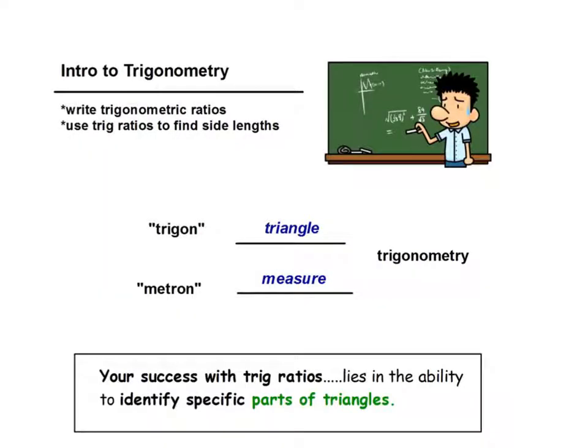So the word trigonometry comes from two words, trigon and metron. Trigon means triangle, and metron means measure. So if you put those together, you get triangle measure, maybe triangle measurement, that gives us trigonometry.